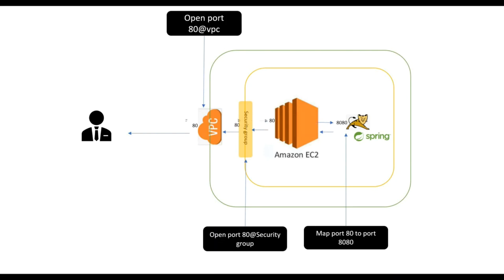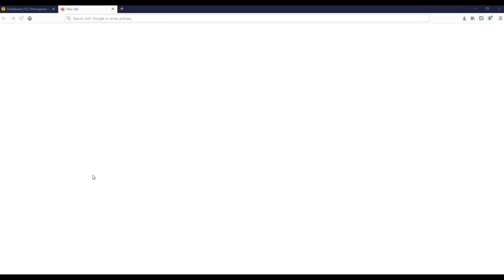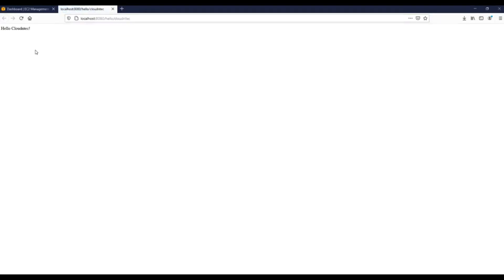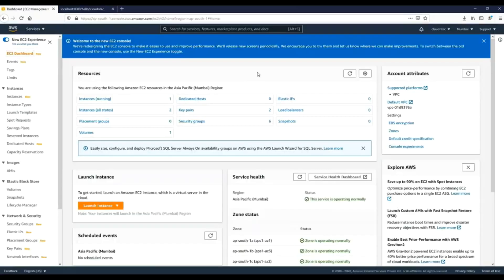So this is all we are going to do. Let's go to the lab where I will be creating a new EC2 instance and deploying a sample Spring Boot application. For the lab exercise I have a demo application — if I hit this endpoint you can see it returns 'hello cloud and tech'. It's a simple GET API in my Spring Boot application. Let's go to the AWS console.